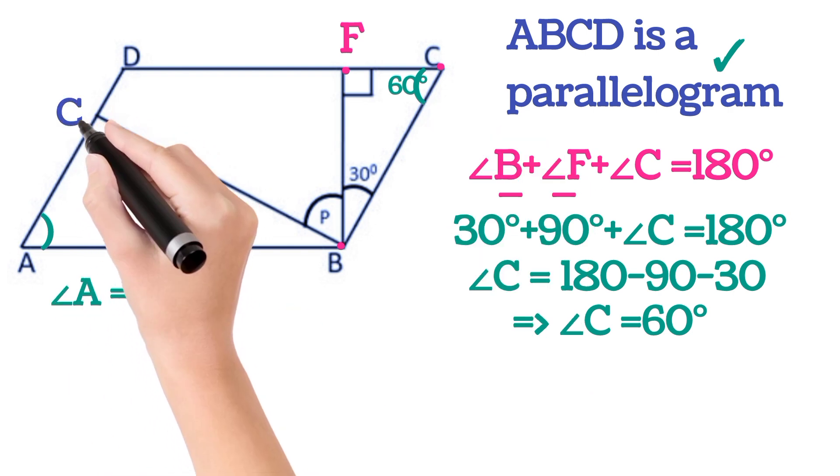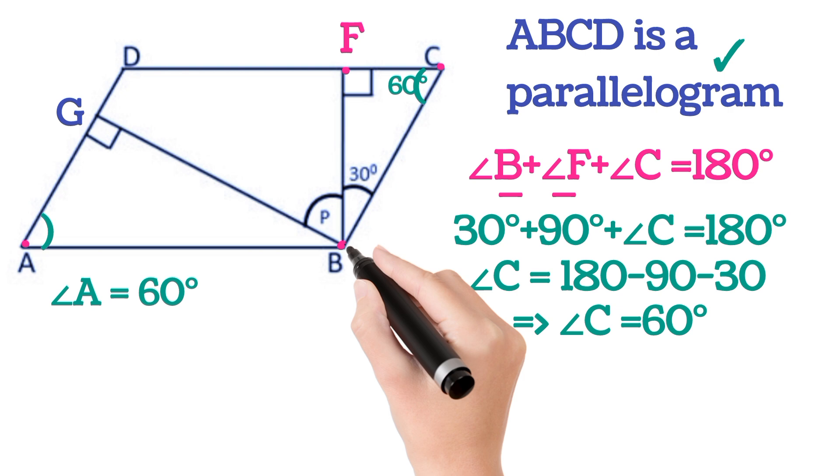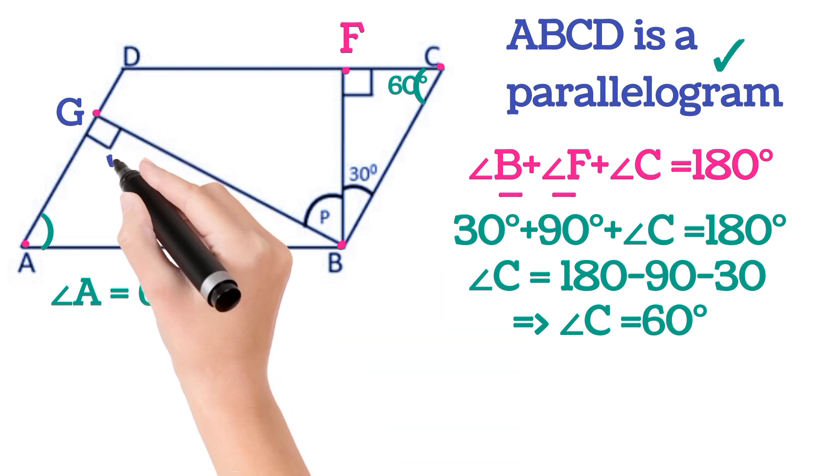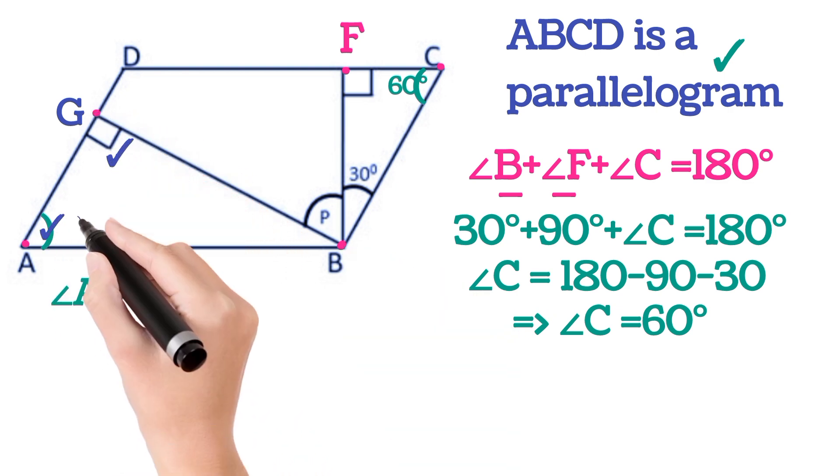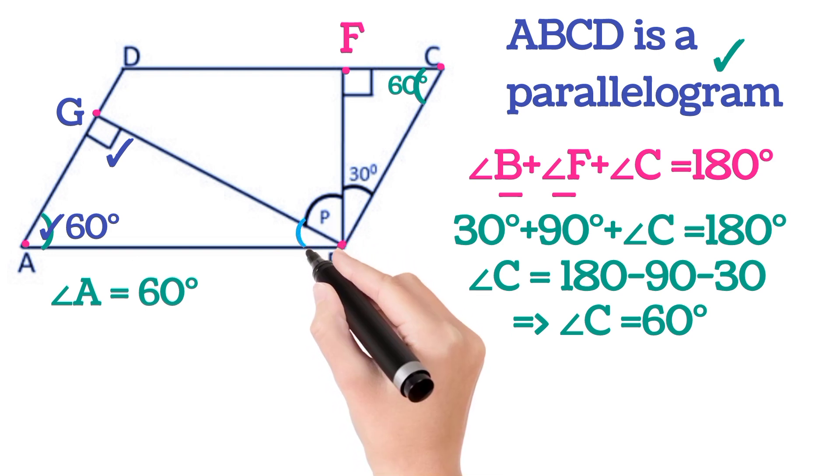So angle A will be 60 degrees. Now let us name it G. In triangle ABG, this angle is 90, this is 60. So angle B will be 30 degrees by angle sum property.